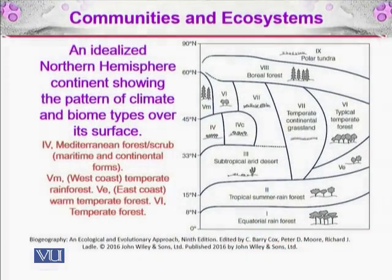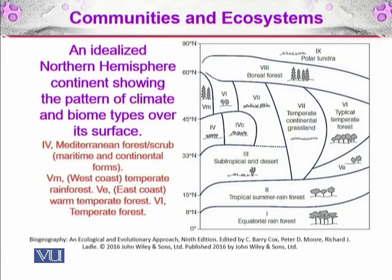Here you can see an idealized northern hemisphere continent showing the pattern of climate and biome types over its surface. Starting from 0 degrees, there is equatorial rainforest. As you go towards the pole, there is tropical summer rainforest, subtropical arid desert, temperate continental grassland, Mediterranean forest and shrubs, west coast temperate rainforest, and east coast warm temperate forest and temperate forest.